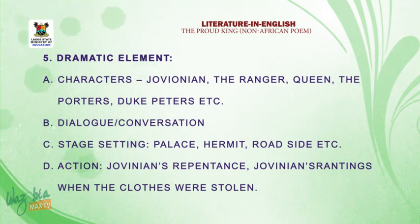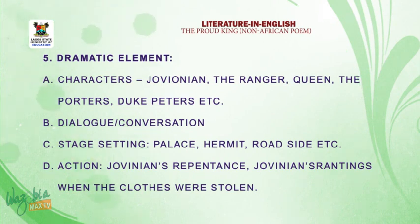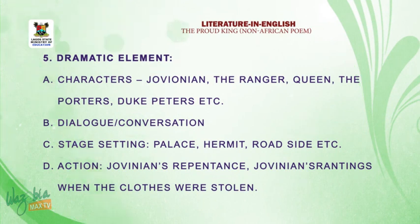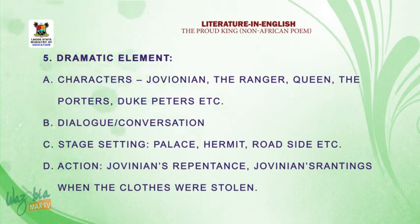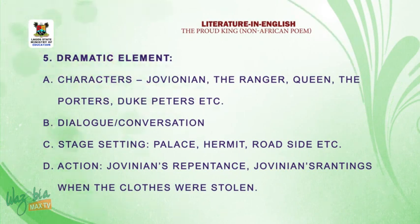We also have the use of stage setting: the palace, the hermit, and the roadside — all form the deformed setting of the poem. The magnificent palace, the hermit of the priest, and the roadside are all settings. Then we have action: King Jovenian's repentance and his ranting when his clothes were taken inside the bush are examples of dramatic elements.